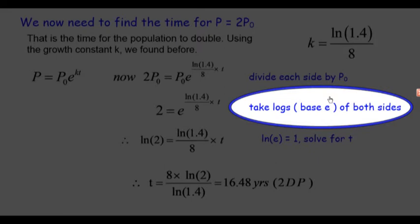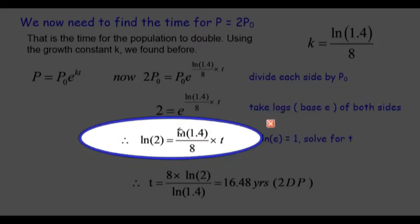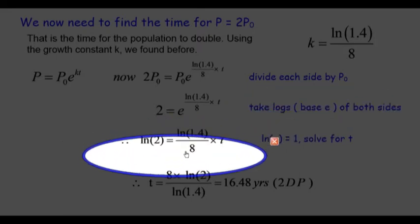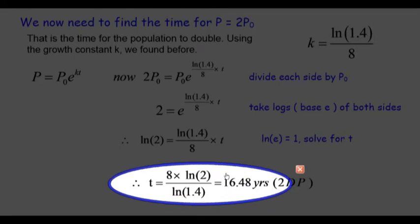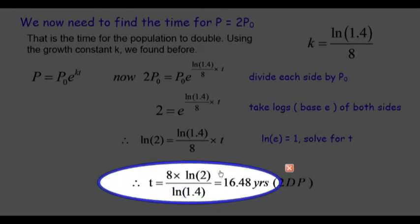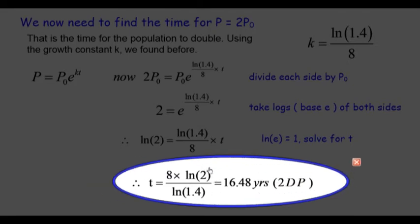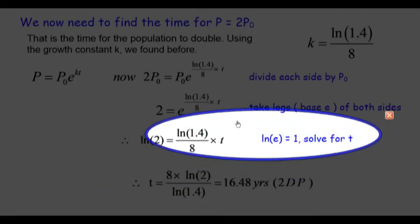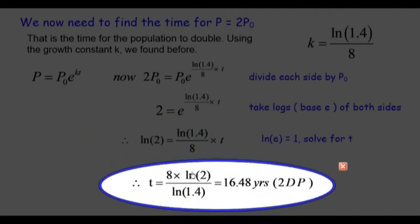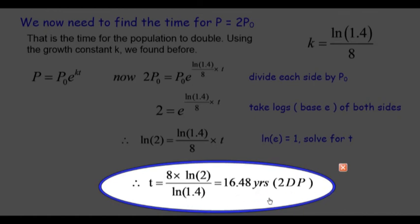Solving for t, it turns out to be about 16 and a half years for the population to double. You need to put this into the calculator and correct to decimal places—it's about 16.48 years.